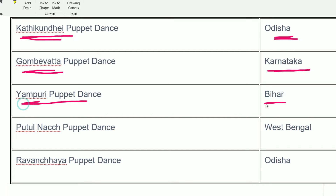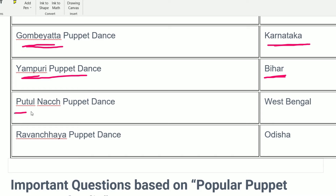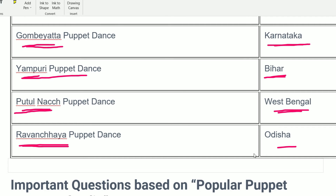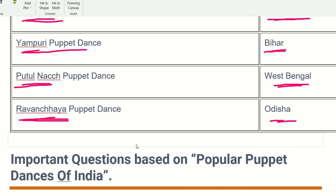Yampuri is a puppet dance from Bihar. Putulnach is from West Bengal. Ravanchya is from Odisha — its name comes from Ravana.